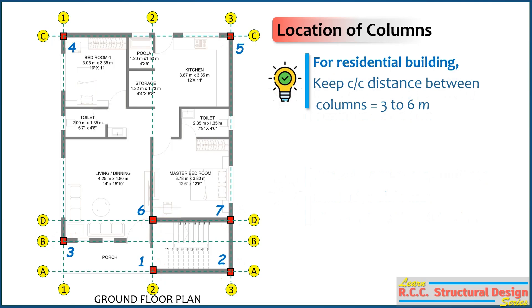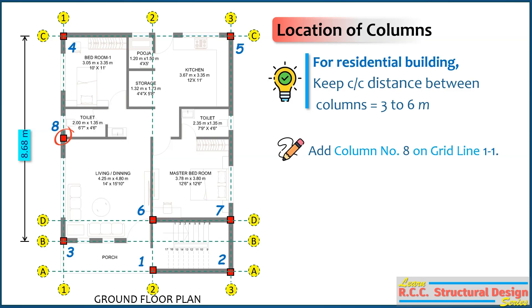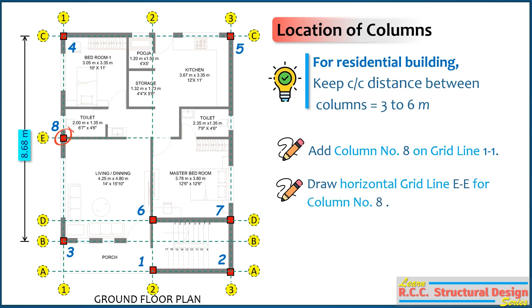Here, the center-to-center distance between columns 3 and 4 is around 8.68m. Hence, we can provide one more column in between these two. Columns can be placed at the intersection of walls if required. Hence, we can add column number 8 at the corner of the living and dining room on grid line 1-1. Now draw horizontal grid line EE for this column.